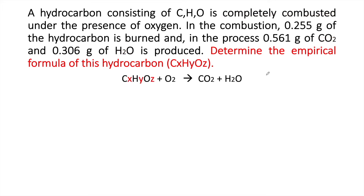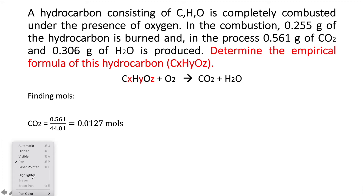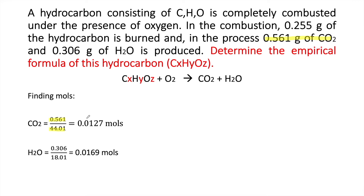So the first thing we have to do is find the moles of CO2 and H2O. We do this by dividing the grams of CO2 by its molar mass, 44.01, to get the moles of CO2. We do the same thing for H2O, which is 0.306 grams divided by its molar mass to get the moles. However, for oxygen, we don't know how to do that directly because oxygen appears in both CO2 and H2O, so we leave that out for now.